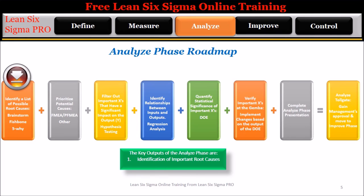The brainstorming, fishbone, and five whys tools are all basic ways to identify possible root causes. Step 2: Prioritize potential causes. If there are a lot of possible root causes and you are uncertain about the impact they may have on the process output, use process failure mode effect analysis, PFMEA, or failure mode effect analysis, FMEA, for those that are equipment related, to prioritize the list of possible root causes.